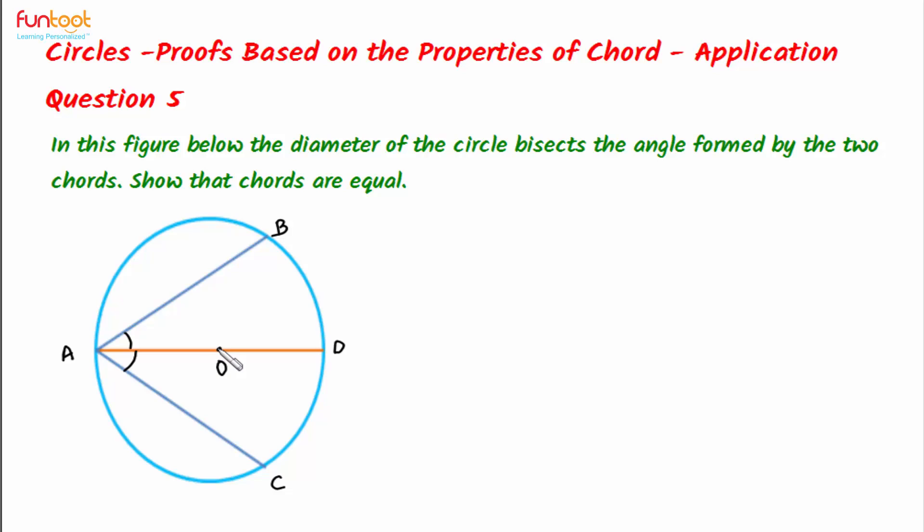Let us suppose that OX is perpendicular to AB. So this is point X and this is perpendicular. And let us suppose that OY is perpendicular to AC. So this is point Y.